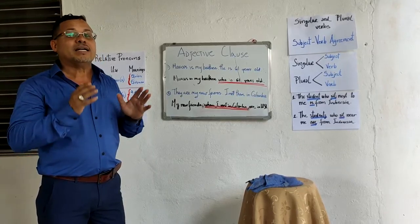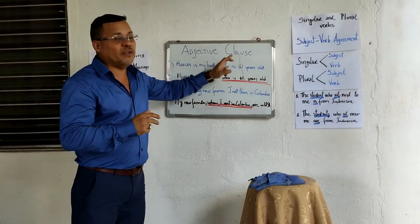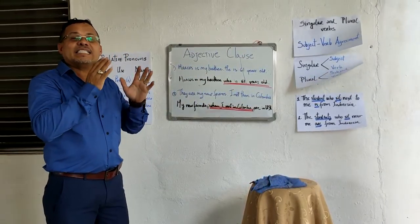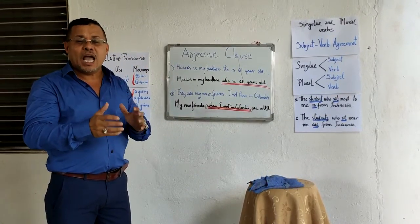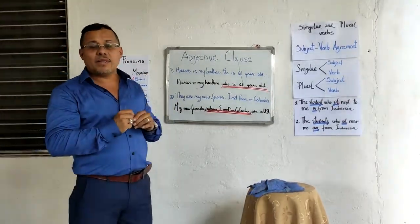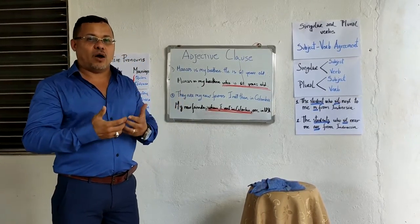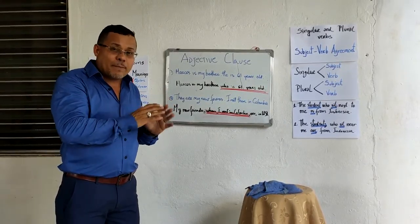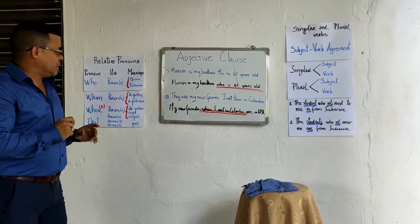For that reason it is also called a relative clause. There are two kinds of adjective clauses. The first one is the essential or definite adjective clause, because it provides information that is necessary to identify the word it modifies. The second one is the non-essential or modifying adjective clause, because it provides further information about the word it modifies, but the independent clause is clear to understand.